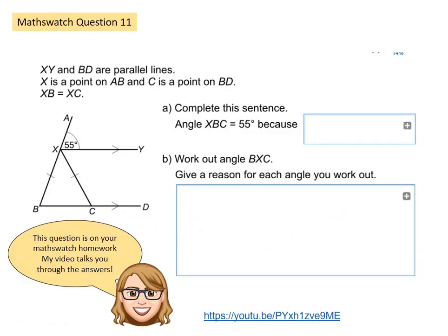Question 11 has a diagram as shown below and you are asked to complete the sentence: Angle XBC is 55 degrees because XBC would be this angle here and I can see that it forms an F shape which is corresponding with this angle here. So it's 55 degrees because corresponding angles are equal.